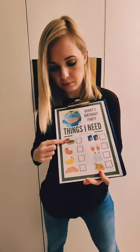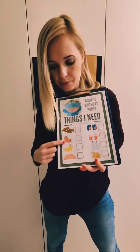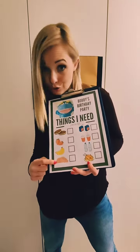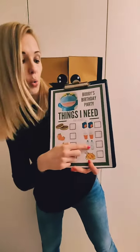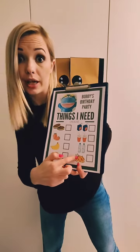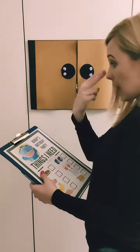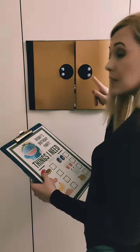Guess what? Bobby is having a birthday party on Saturday. I must go to the supermarket to buy some food. I need biscuits, strawberries, bananas, sausages, juice, cola, water and chicken. Let's open the cupboard and see what's inside.